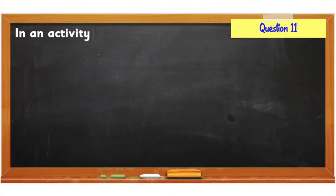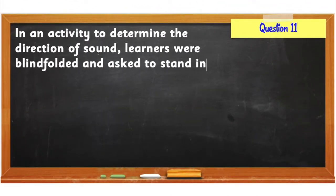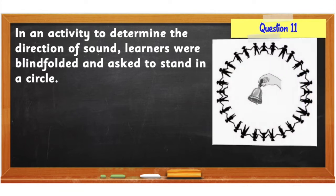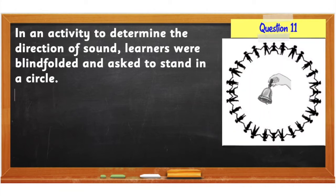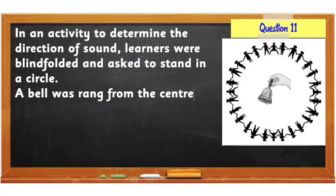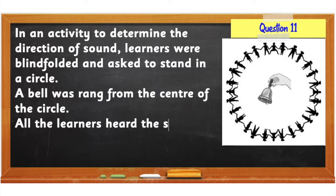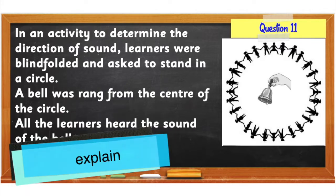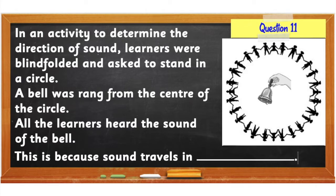Question number 11: In an activity to determine the direction of sound, learners were blindfolded and asked to stand in a circle. A bell was rang from the center of the circle. All the learners heard the sound of the bell. Explain. This is because sound travels in all directions.